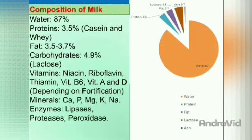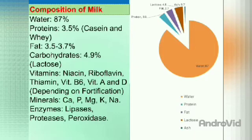Next is the composition of milk. In that chart or graph we can see the composition of milk. Generally, milk contains 87% water and 3.5% protein. In that protein, there are two types: casein protein and whey protein. In total protein, 80% is casein and the remaining 20% is whey protein.